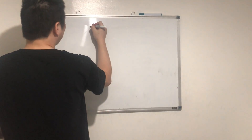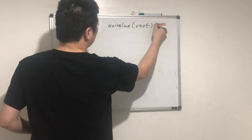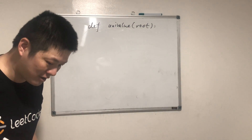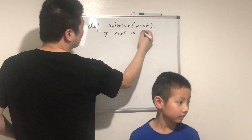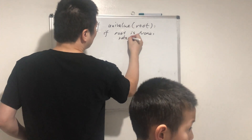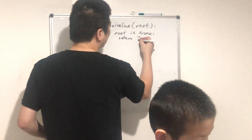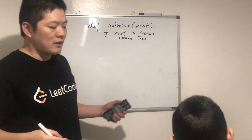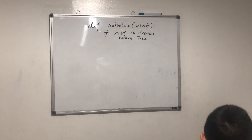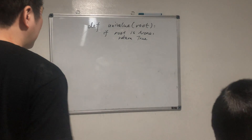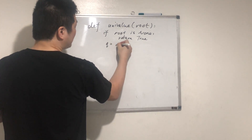Okay, let's code this up. Define univalue with root as parameter. If root is null, we return true — because an empty tree is a special case which we define as having a unique value. Now we initialize a deque — DQ, which stands for double-ended queue. The queue is initialized with the root.